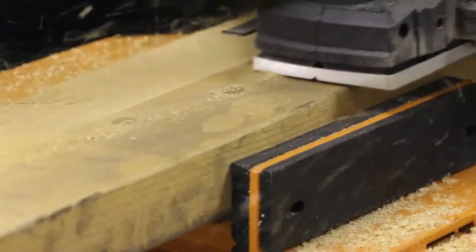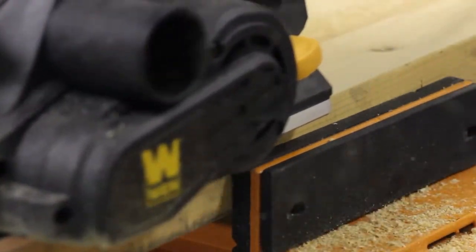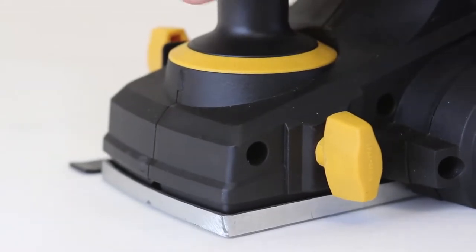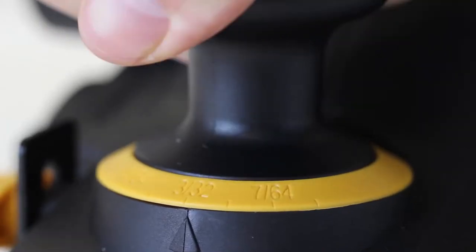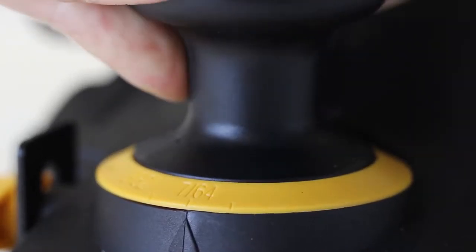The 6 amp motor provides up to 34,000 cuts per minute through even the hardest of woods. While most of our competitors have a maximum depth of 5/64ths of an inch, the Wynn planer exhibits 16 positive stops in 1/128th inch increments to fine tune your cuts anywhere up to an eighth of an inch deep.